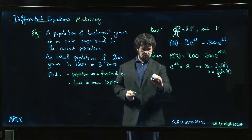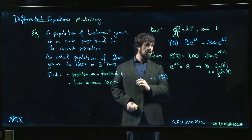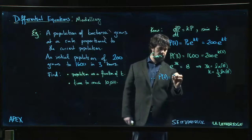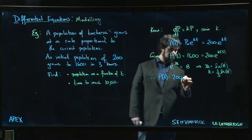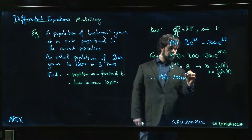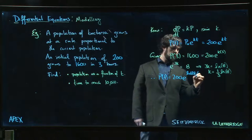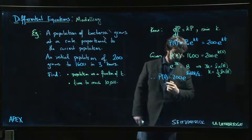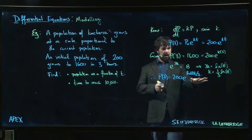So we put that in. That gives me p(t) is equal to 200 times e to the natural log of 8 times t over 3.